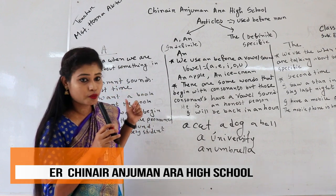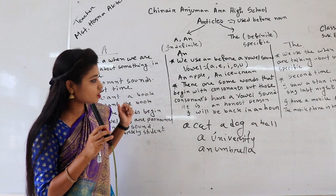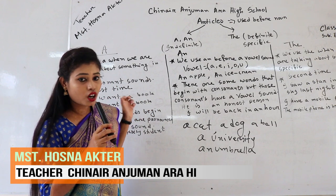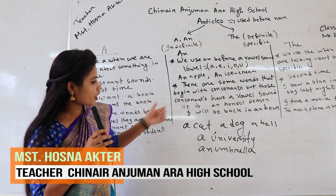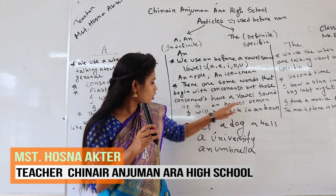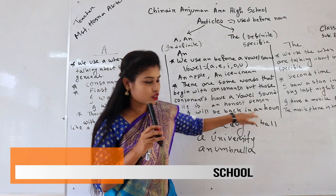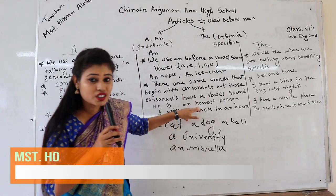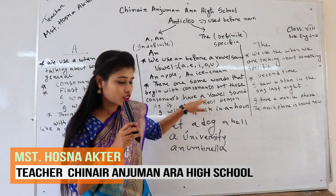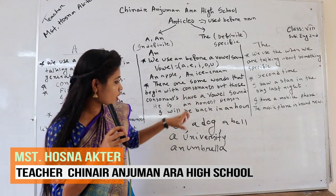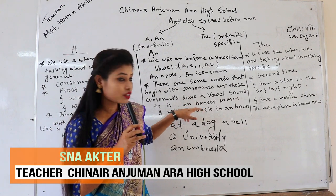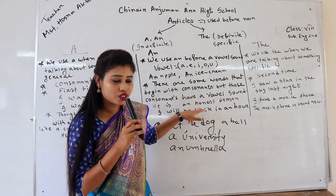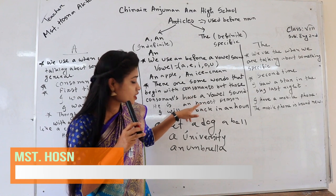But there are some words that begin with consonants, but those consonants have a vowel sound, so we use 'an' instead of 'a' before those words. For example: 'He is an honest person.' Look at the word 'honest' — we don't say 'h-onest,' we say 'honest' because here the 'h' is silent. So we use 'an' as it sounds like a vowel sound, though the first letter of the word is 'h'.